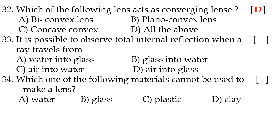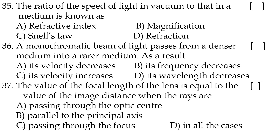Thirty-third question: it is possible to observe total internal reflection when a ray travels from option B, glass into water — denser to rarer medium. Thirty-fourth question: which material cannot be used to make a lens? Option D, clay. Thirty-fifth question: the ratio of the speed of light in vacuum to the speed in a medium is known as option A, refractive index.